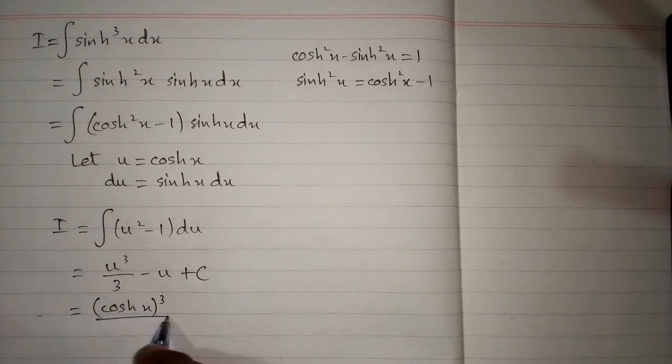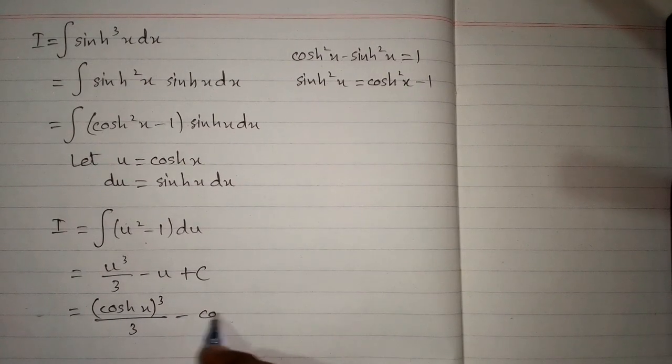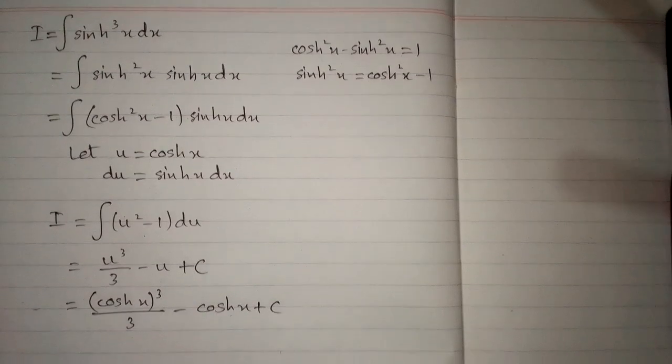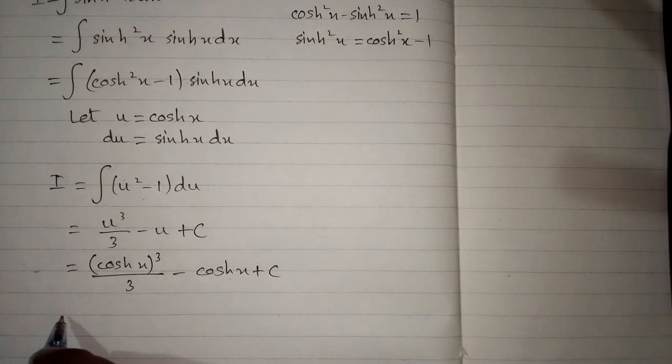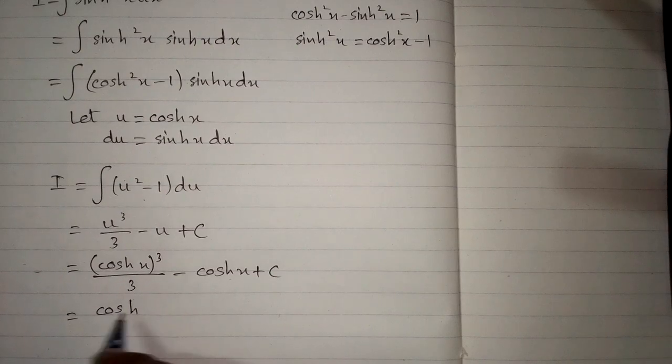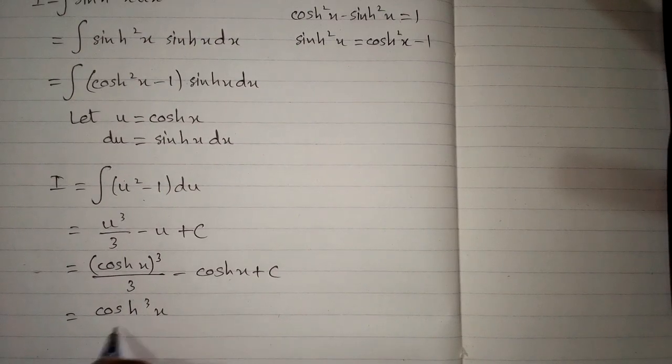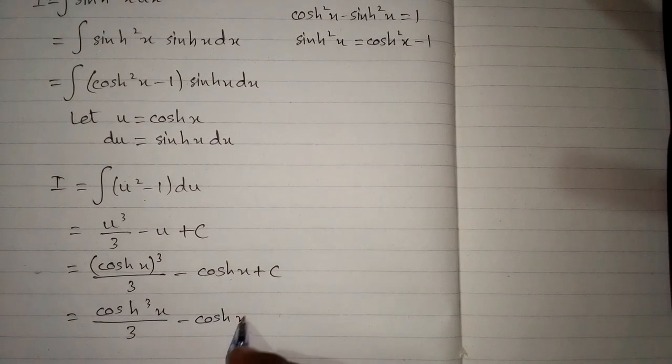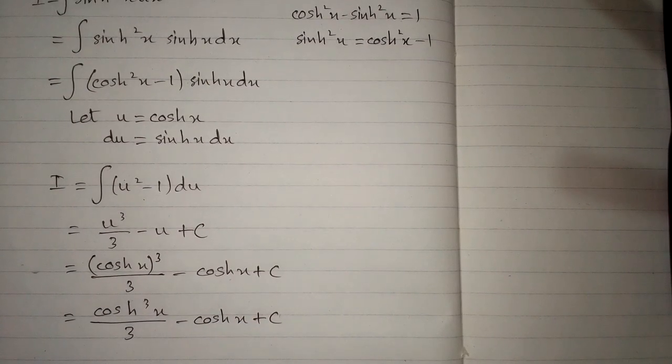hyperbolic cos x cube upon 3 minus hyperbolic cos x plus c. Here c is the constant of integration and this can be written as hyperbolic cos cube x upon 3 minus hyperbolic cos x plus c. So this is the answer.